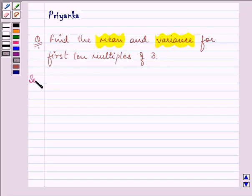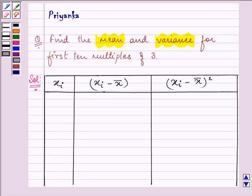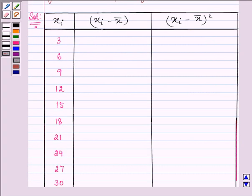So let us make a table to simplify our calculations. Now here first of all we need to write down the first 10 multiples of 3 and that is 3, 6, 9, 12, 15 and so on till 30.